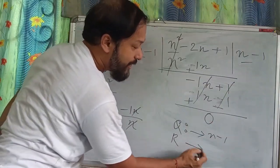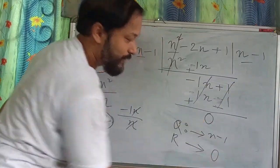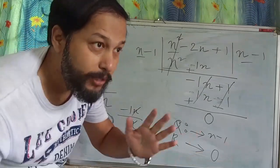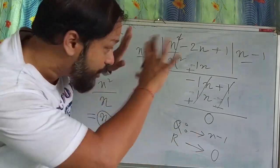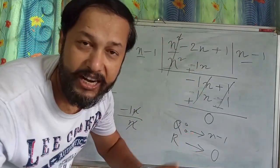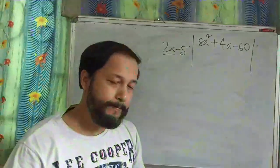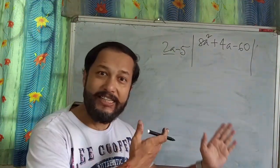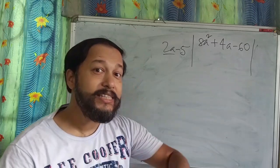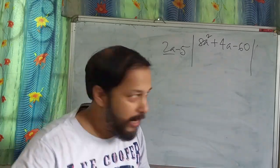The remainder is zero. We'll see another example so that we can understand the whole process very clearly. Here also, we are going to use the same steps which we have seen in the previous sum.